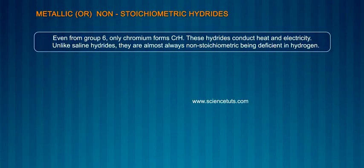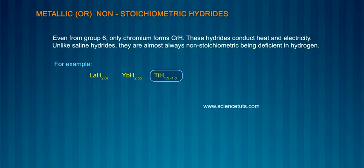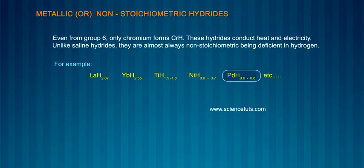Unlike saline hydrides, they are almost always non-stoichiometric, being deficient in hydrogen. For example: LaH₂.₈₇, YbH₂.₅₅, TaH₁.₅₋₁.₈, NiH₀.₆₋₀.₇, PdH₀.₆₋₀.₈.